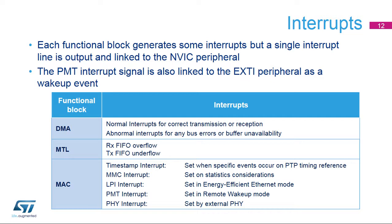The DMA also raises interrupts for all bus errors or buffer unavailability. The MTL block generates interrupts when overflow is detected on the received path or when an underflow is detected in the transmit path. The MAC block generates interrupts linked to PTP protocol settings, MMC counters, energy-efficient Ethernet, and remote wake-up low-power modes. It also transfers the interrupt coming from the external PHY.